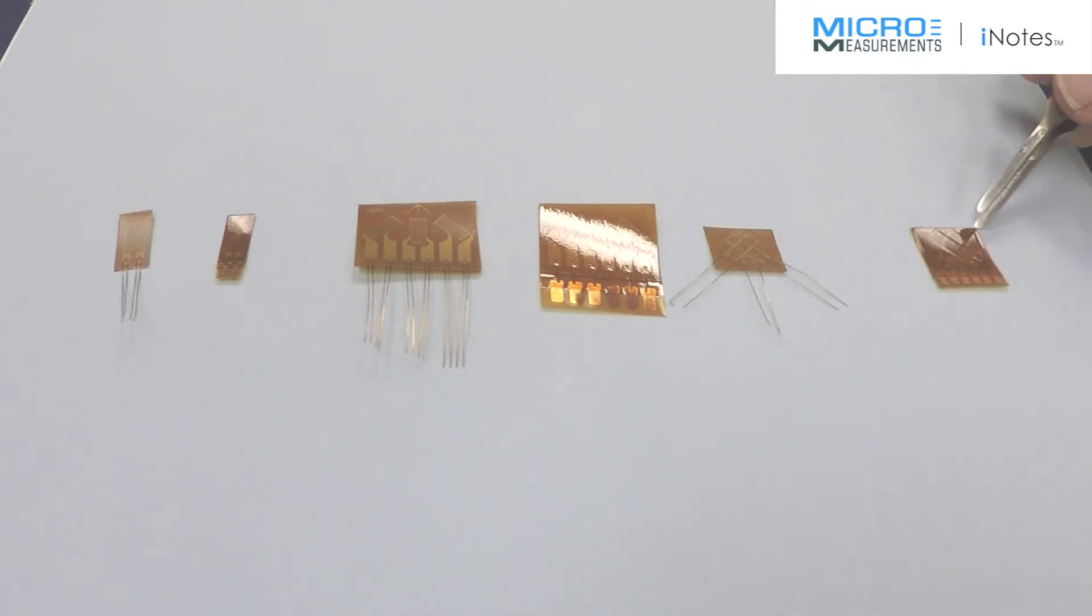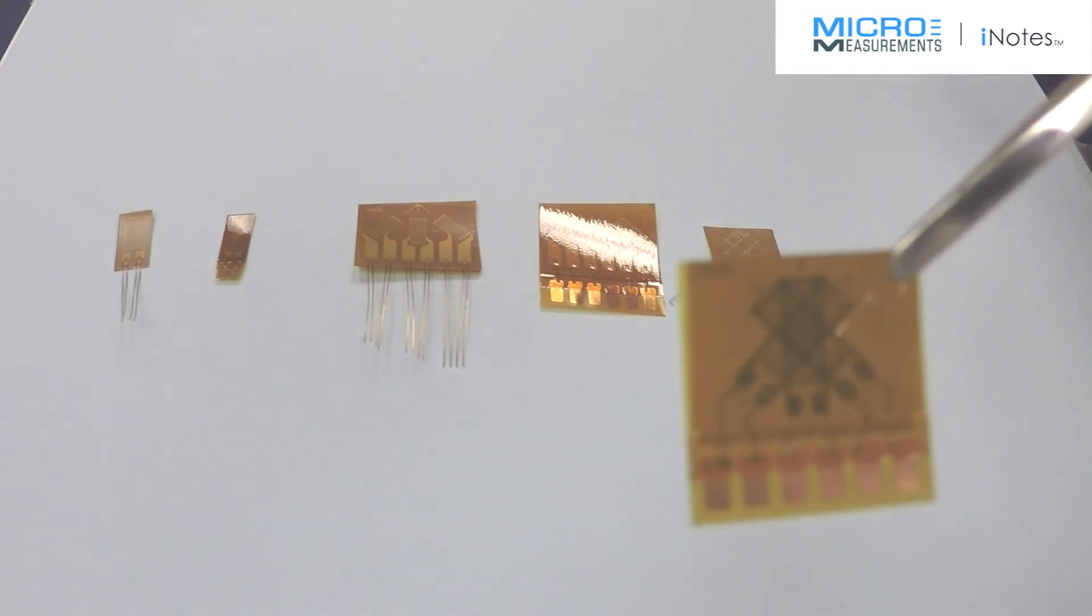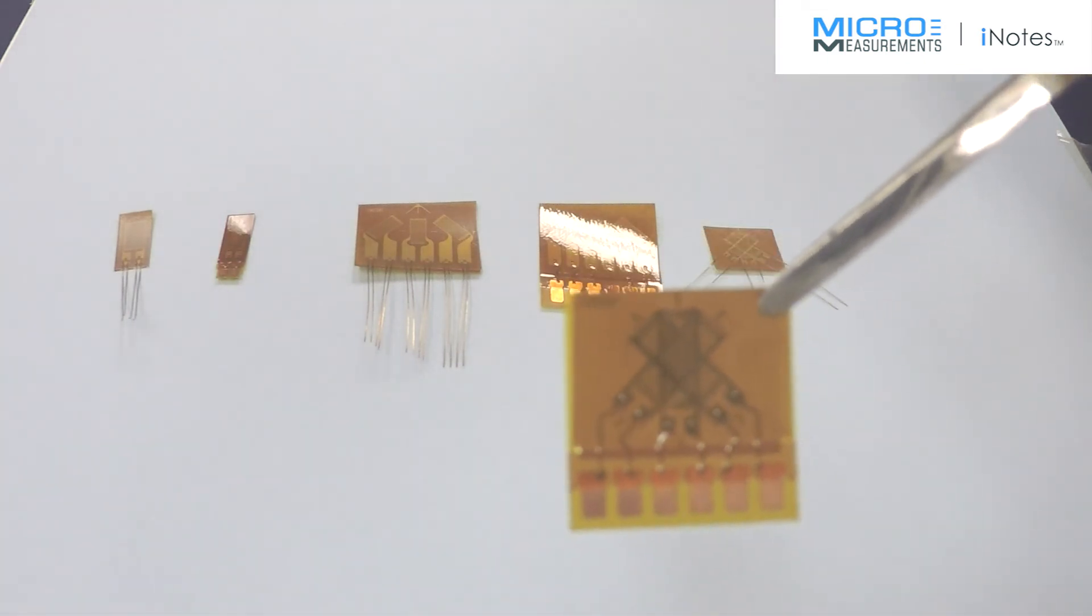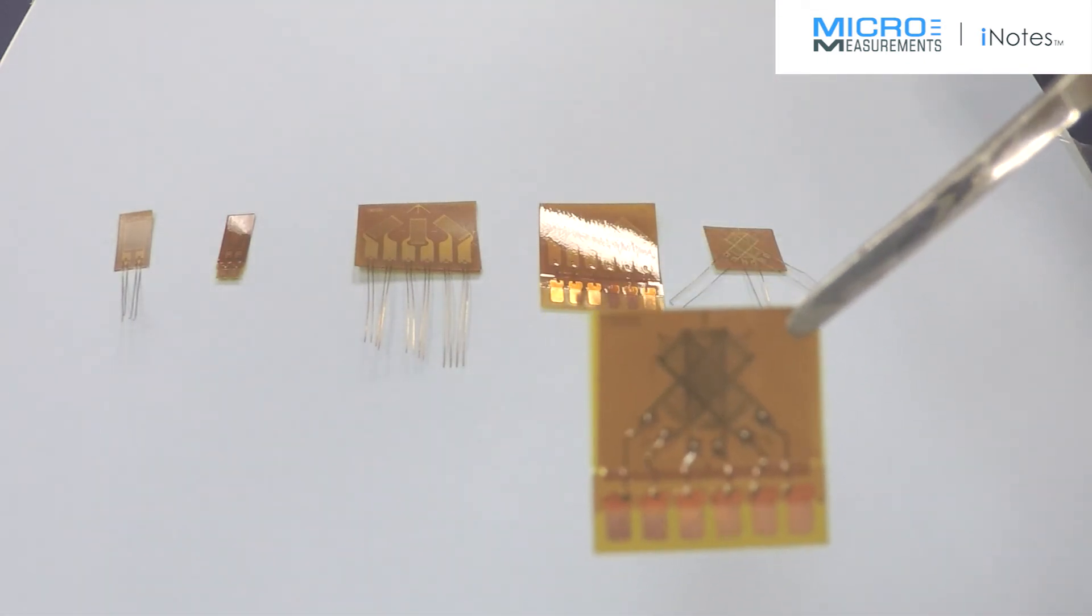And again, the same thing occurs with the stacked rosette. The option W will make it more convenient, but you lose fatigue life.